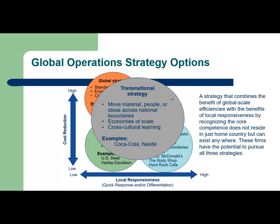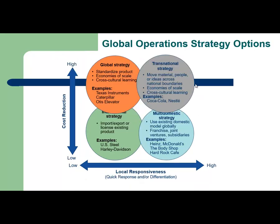If the company needs to move material, people, or ideas across national boundaries, use mass ordering capabilities, and benefit from cross-cultural learning, then the best strategy will be the transnational strategy. These firms have the potential to pursue all three strategies since they have the capabilities of being flexible. This strategy resides in the upper right corner of the strategy graph with the highest cost reduction and fastest response to the market.